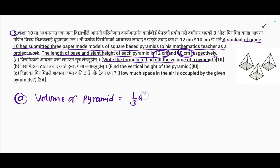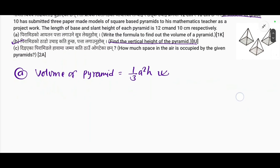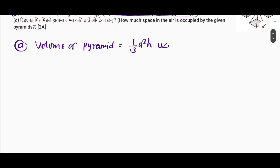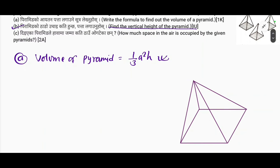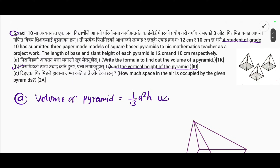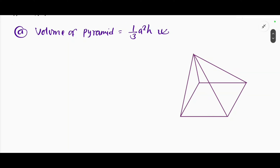The volume formula is equal to 1/3 times a-squared times h. Question part b: find the vertical height of the pyramid. We attach a right-angle triangle to find the vertical height, and we will use iteration on the triangle.